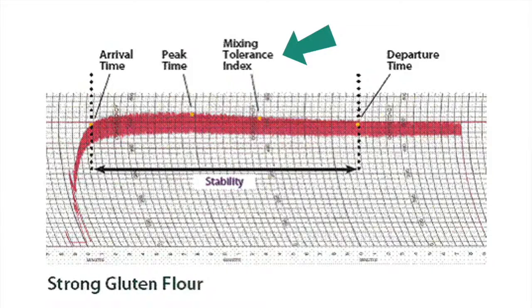The next one is what they call the mixing tolerance index, or MTI — this one is critical. It's one I always look at when receiving flour and guide plants to start addressing. The MTI takes the peak time and counts five minutes after that, measuring how many Brabender units the curve drops from the peak to five minutes after the peak is reached. The higher the number, the more it dropped, meaning the flour can't take as much mix. The lower the number, the stronger the flour.